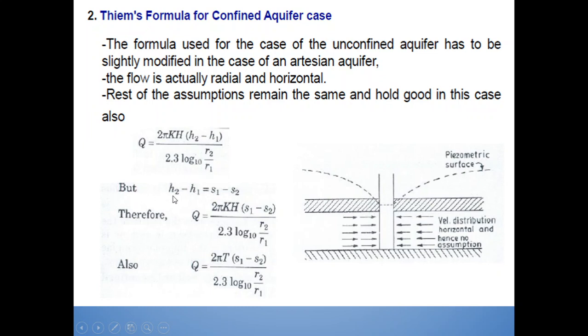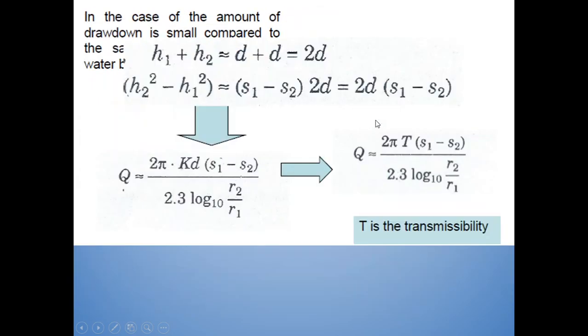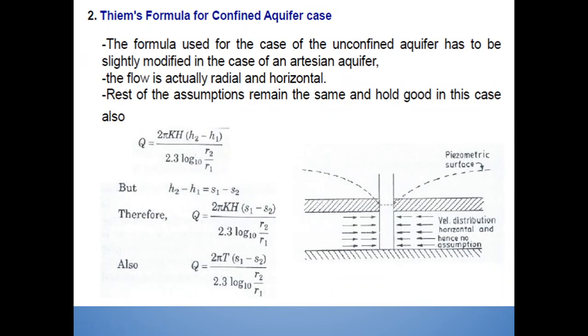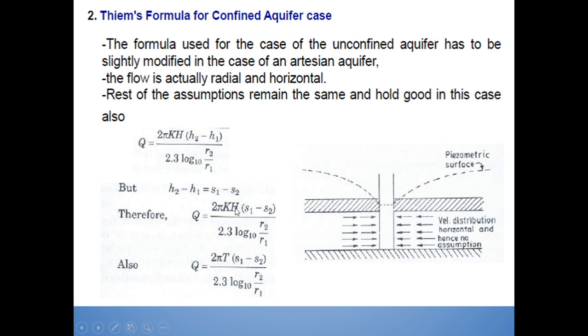But here, as I stated earlier in previous equation derivation, h2 minus h1 is equal to s2 minus s1. To remember in a quick overview, h2 minus h1 will be equal to s1 minus s2. Therefore, q is equal to 2πkh(s1-s2)/(2.3 log10(r2/r1)). Also, q is equal to 2πt(s1-s2)/(2.3 log10(r2/r1)) where t is transmissibility and which is equal to k into h, where h is the depth of this confined aquifer. So here you can see this term, it is replaced by h.